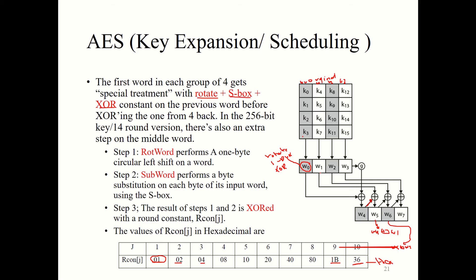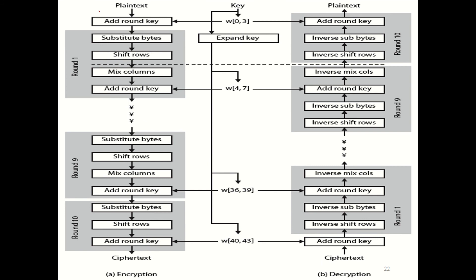In 256-bit AES they have added an extra step in the middle: the SubWord step. The SubWord performs a byte substitution on each byte of its input word using the S-Box. The result of the rotate and SubWord steps is XORed with the round constant. This is the whole picture of the AES algorithm — plaintext encryption and decryption while the key is expanded. The first key uses words 0 to 3, the second key uses words 4 to 7, and so on.